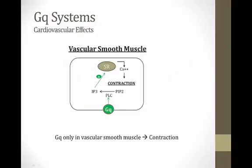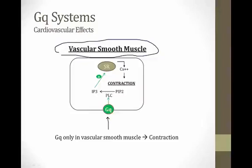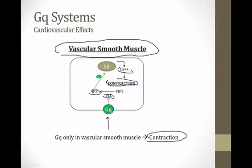The GQ system is found only in vascular smooth muscle, not the heart. Stimulating a GQ protein activates phospholipase C, which hydrolyzes PIP2 (phosphatidylinositol bisphosphate) into IP3 (inositol trisphosphate). IP3 activates the sarcoplasmic reticulum to release calcium, causing contraction. So stimulating GQ proteins leads to contraction in vascular smooth muscle.